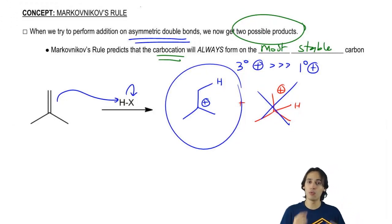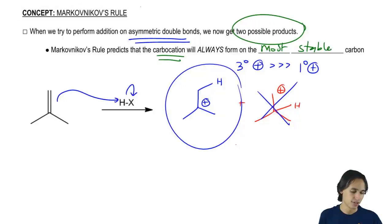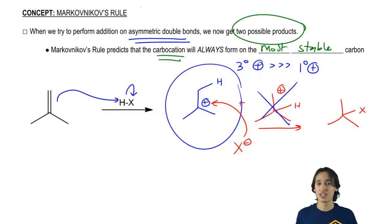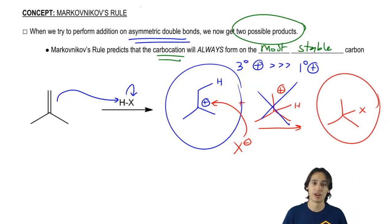So now that I know which carbocation is going to form, now I just need to draw my final product. The X minus is now going to attack there. What that means is that my final product is going to just be a molecule that looks like this. Now notice that I didn't draw the H because I don't have to. H's are always implied unless they're attached to heteroatoms.